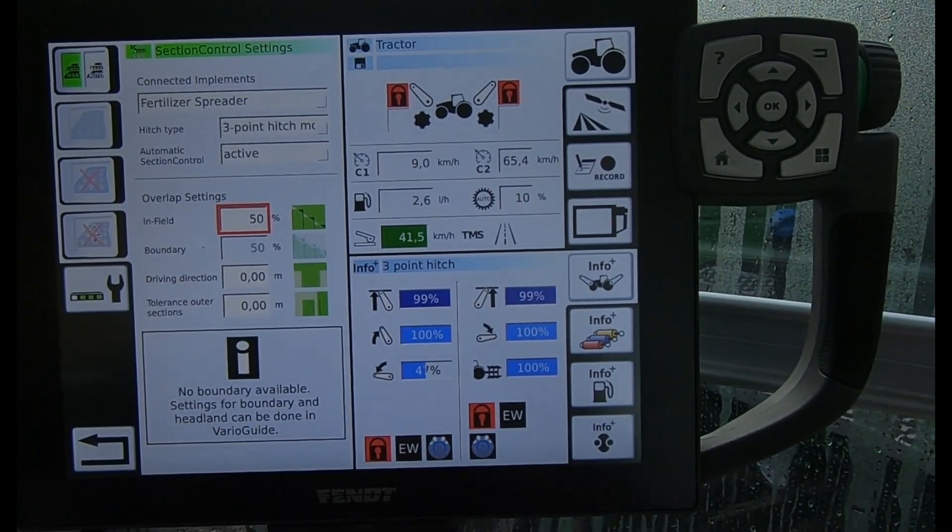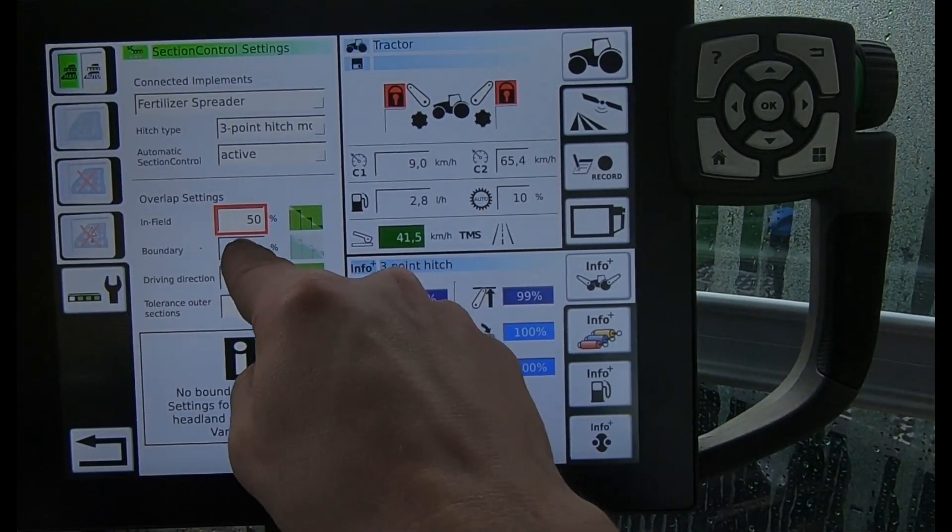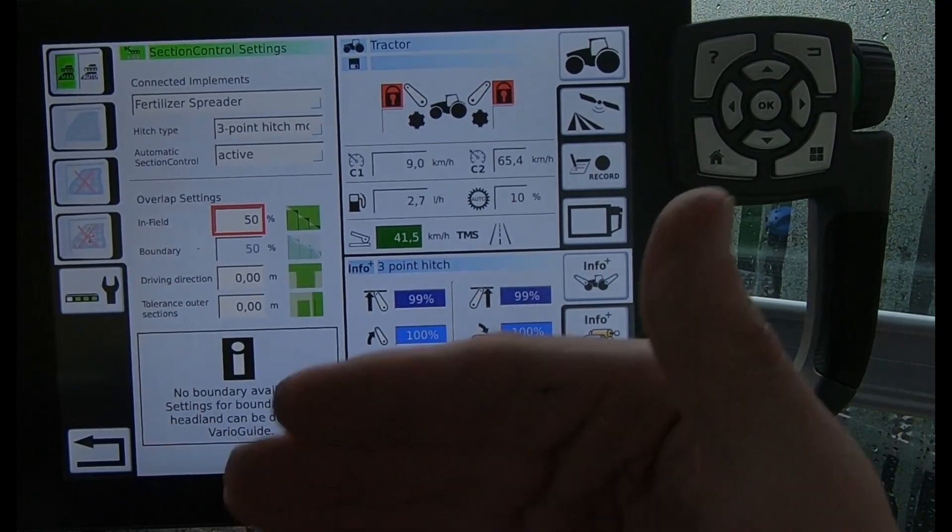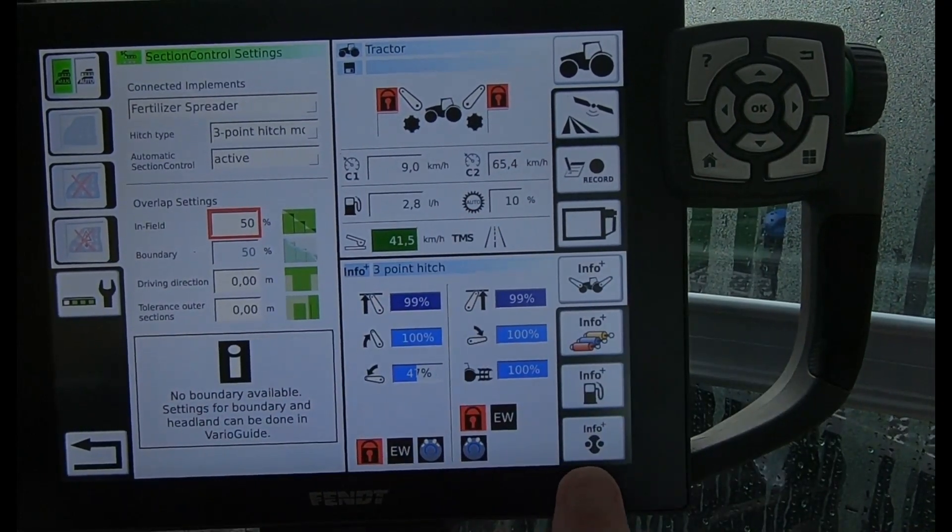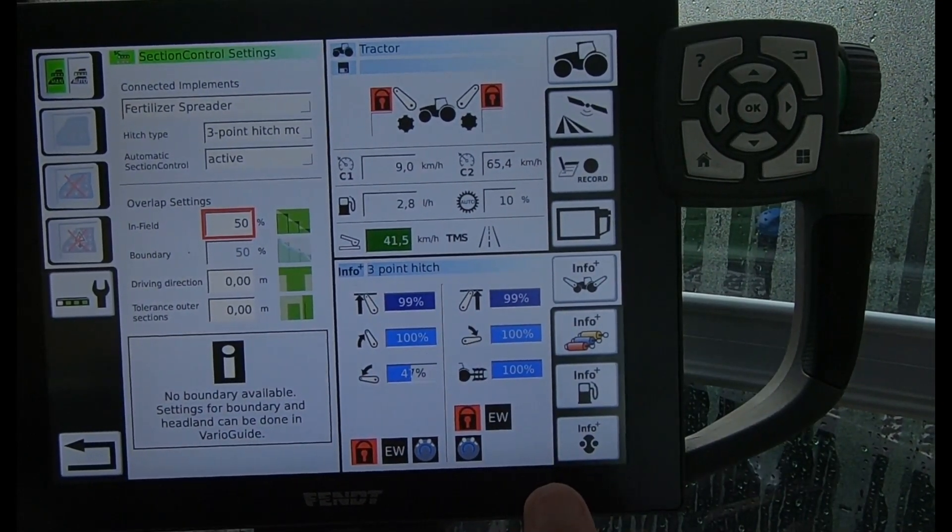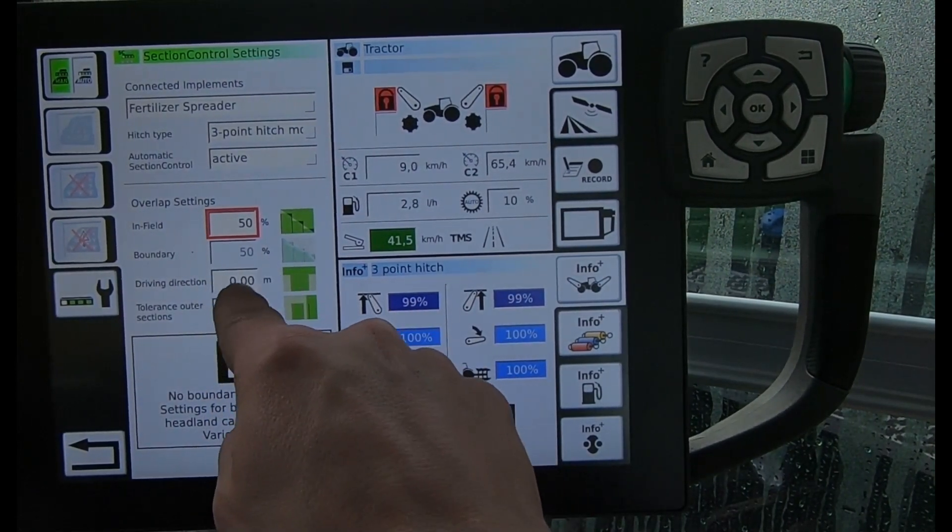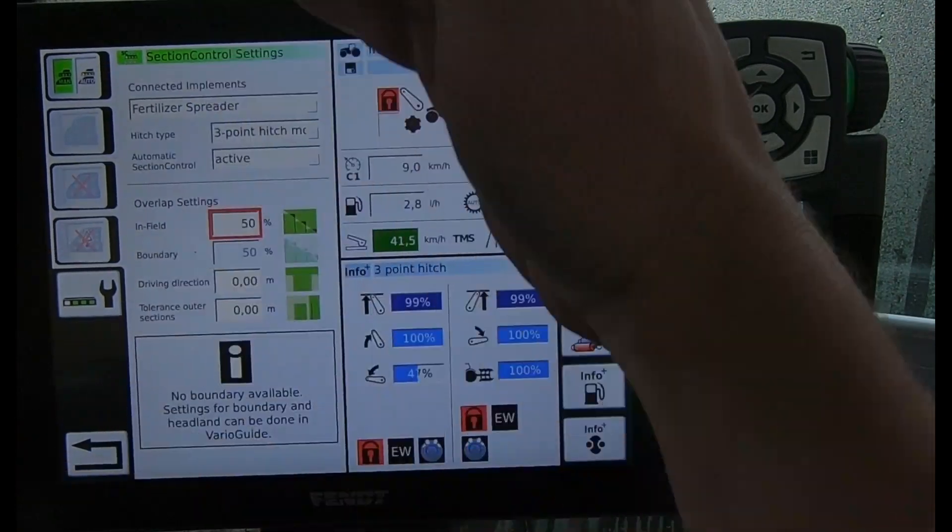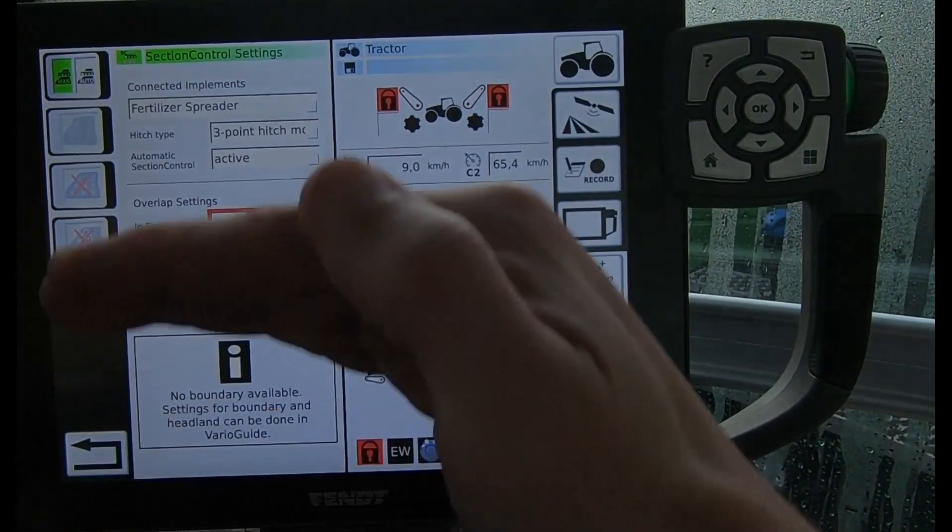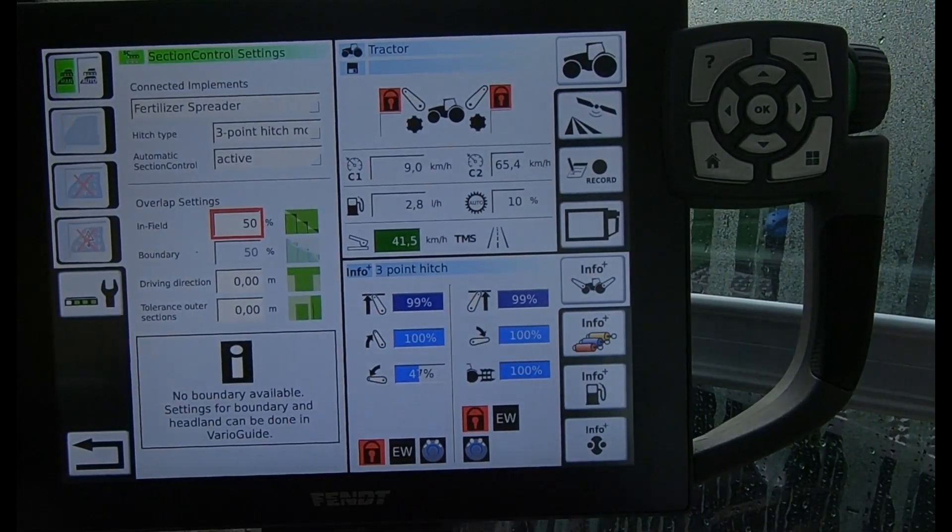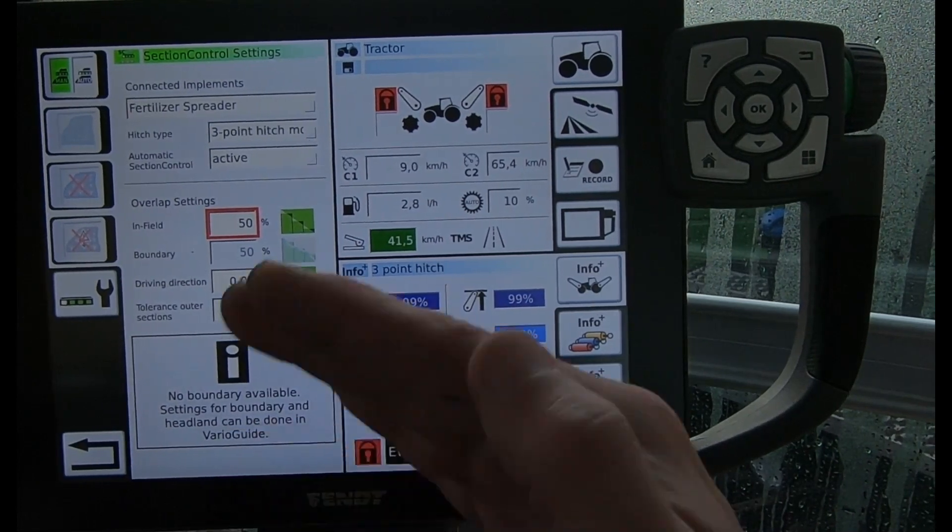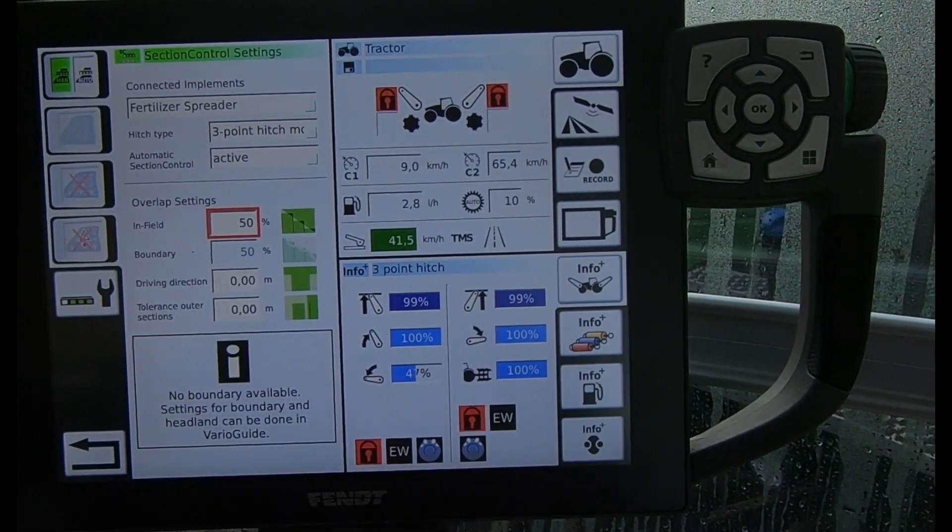It's how much overlap I have with the system. If I've got a boundary then this one would be active, so it allows how much overlap before that section gets turned off. In here then I can look at my driving directions. This would just be moving everything either forwards or backwards if things are timed out or we're switching on and off not quite in the correct position, just a bit of a crude measurement there.